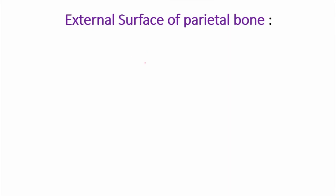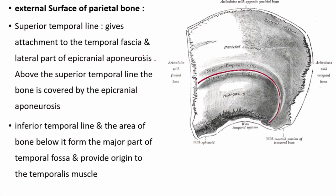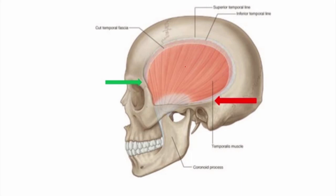The external surface of the parietal bone is marked by two lines: the superior temporal line and the inferior temporal line. The superior temporal line is attached to the temporal fascia and the lateral part of the epicranial aponeurosis. The inferior temporal line is attached to the temporalis fascia. This portion of the parietal bone forms most of the part of the temporal fossa.